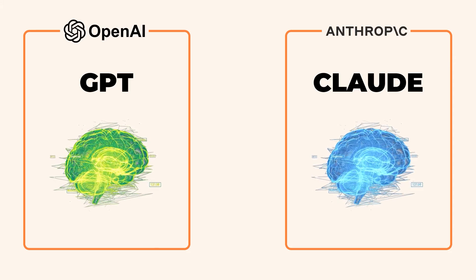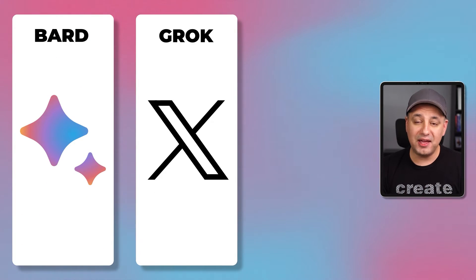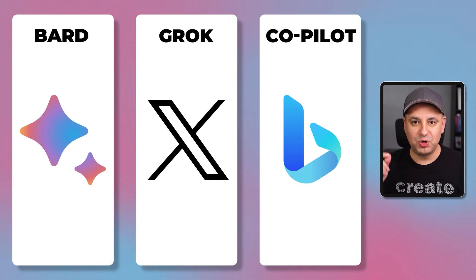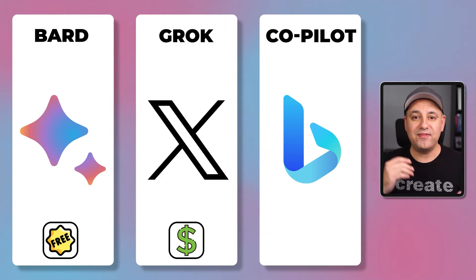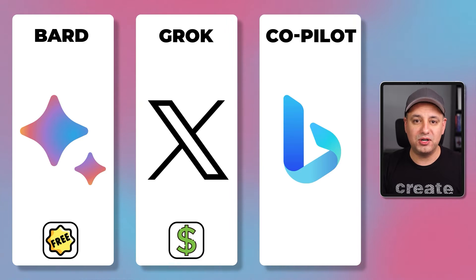ChatGPT and Claude both have a paid version at $20 a month. The reason to upgrade is that they give you the best version of that model — trained on more data, giving better responses, and generally seeming more knowledgeable. Sometimes there are limitations on how much data you can feed it, so you may need to pay for the upgrade to get the best version. But they all do have a free version too. Google Bard, X.com's Grok, and Microsoft Copilot are also available. Grok is a paid upgrade; Bard is currently free, and it runs on a model called Gemini in the background.